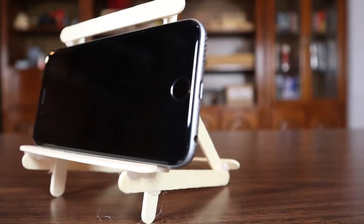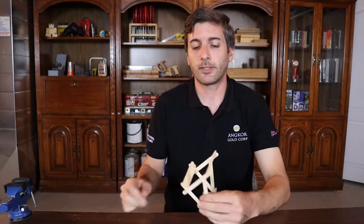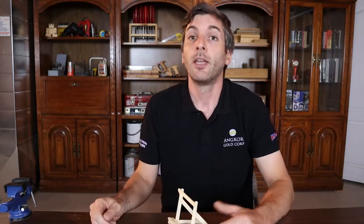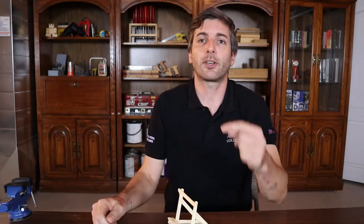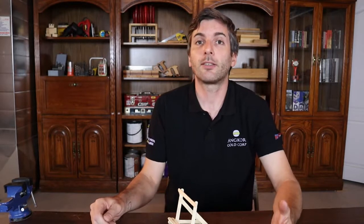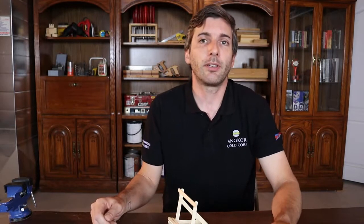So this popsicle stick phone stand is made out of 10 popsicle sticks. The side triangles are three popsicle sticks with supports on the top and bottom, and all the dimensions and instructions will be in the description below so you can always check it out there. Don't forget to subscribe to not miss any more really great content like this. Now let's get into the build.